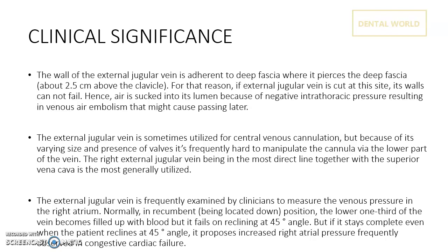The external jugular vein is sometimes utilized for central venous cannulation, but because of its varying size and presence of valves it is frequently hard to manipulate the cannula via the lower part of the vein. The right EJV, being in the most direct line with the superior vena cava, is the most generally utilized for central venous cannulation.